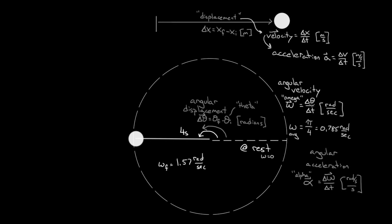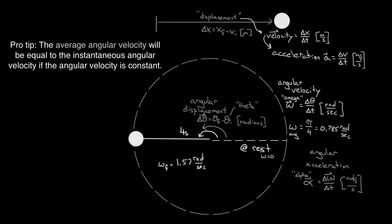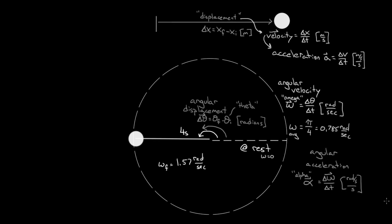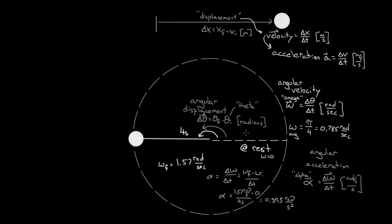We can find the angular acceleration using the formula: change in omega over change in time. That would be omega final minus omega initial over time — 1.57 minus zero divided by four seconds — which comes out to be 0.393 radians per second squared. Technically, that is also the average angular acceleration during this trip, but if the angular acceleration was constant, which in almost all cases we're going to look at, this would be both the average value and the instantaneous value of the angular acceleration at every point on the trip.